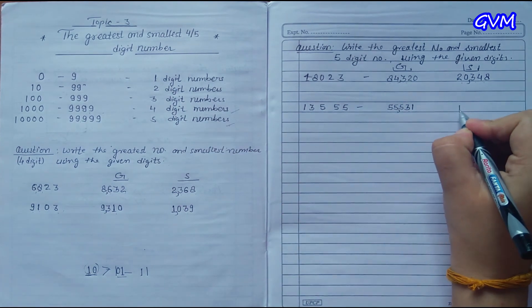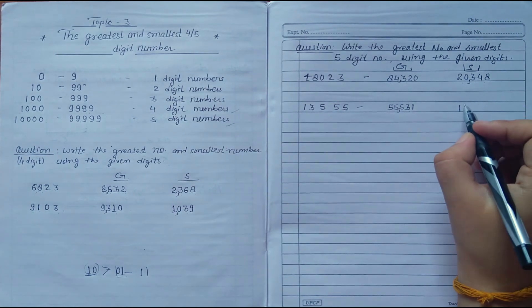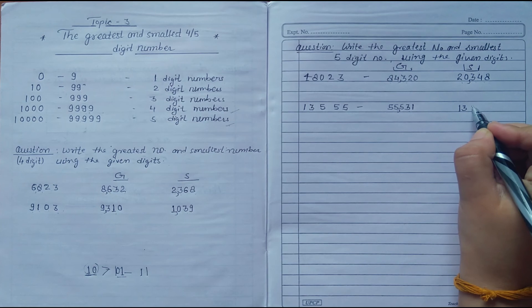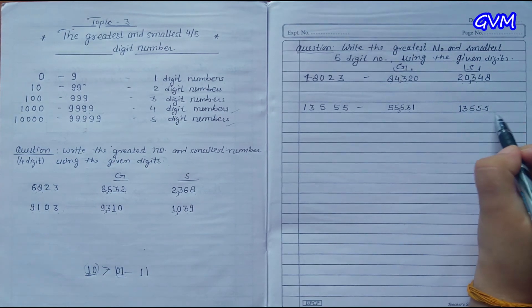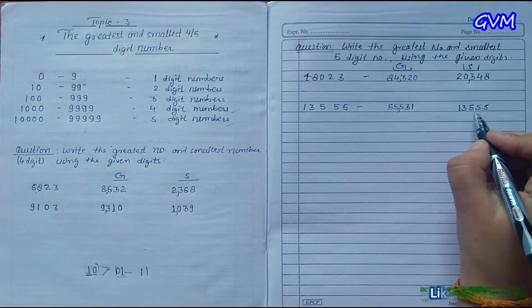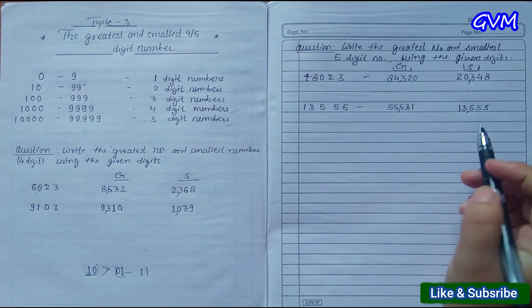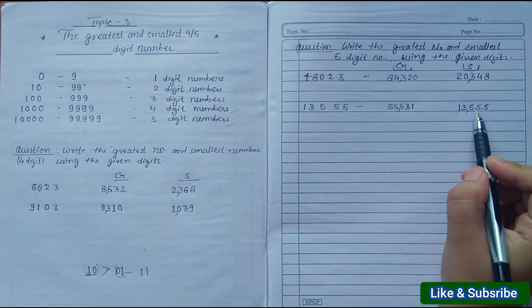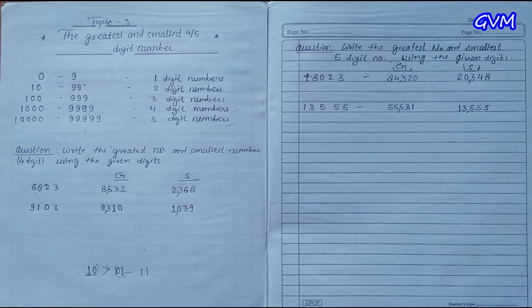For the smallest number, arrange in ascending order. Write 1 first because it is the smallest, then 3, then 5, 5, 5 — three fives. Put a comma — this gives us 13,555 as the smallest number.